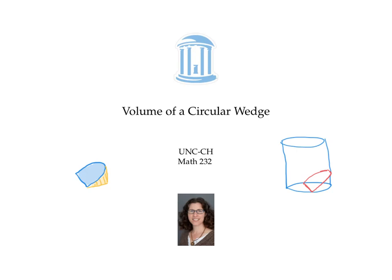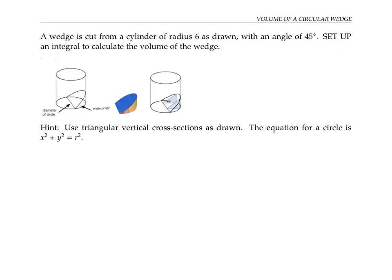In this video, I'll calculate the volume of a circular wedge cut from a cylinder by thinking about cross-sections. A wedge is cut from a cylinder using a plane that has an angle of 45 degrees. We're asked to set up an integral to calculate the volume of the wedge by thinking about triangle-shaped cross-sections.